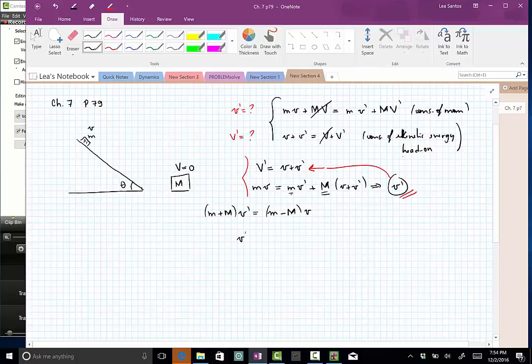So you see that the final speed of the light object is small m minus big M, V divided by small m plus big M. So this is telling us that the speed is negative.